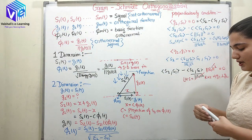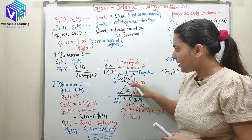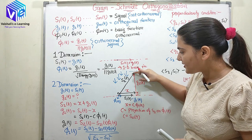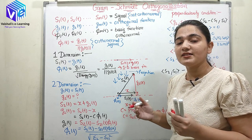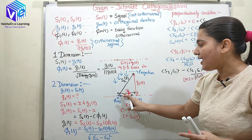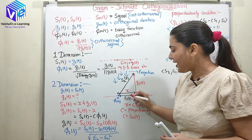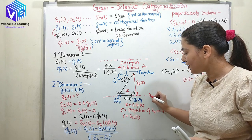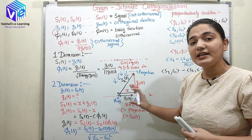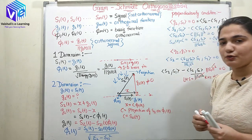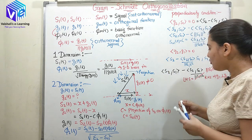If g₂(t) becomes 0, then s₂(t) will lie on s₁(t) only — but this is against the basic properties of basis functions. The inherent property of basis is that two basis functions should be linearly independent. If s₁(t) and s₂(t) both lie on the same axis, I can find s₂(t) in terms of s₁(t) easily, which violates linear independence. So g₂(t) can never be equal to 0. This is also a property of basis functions.